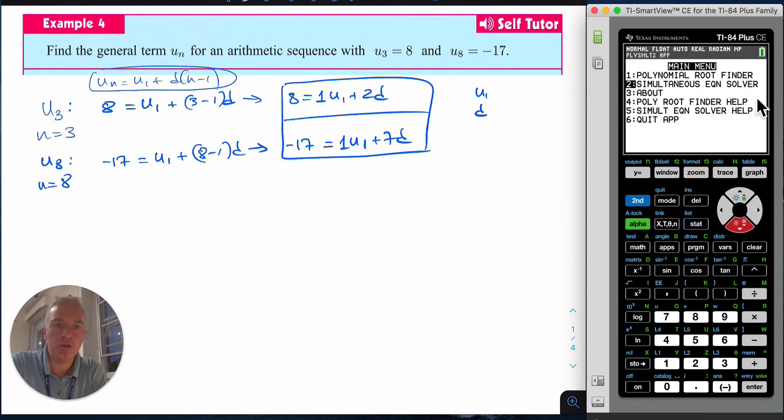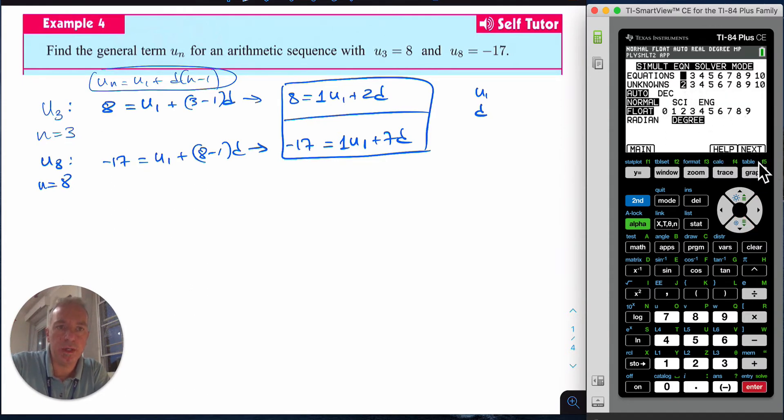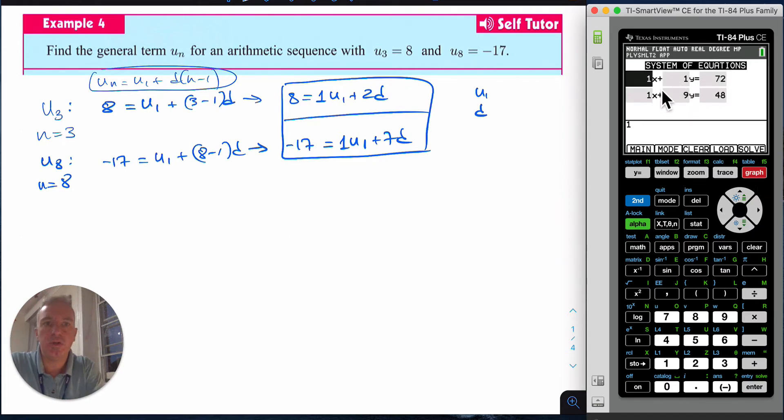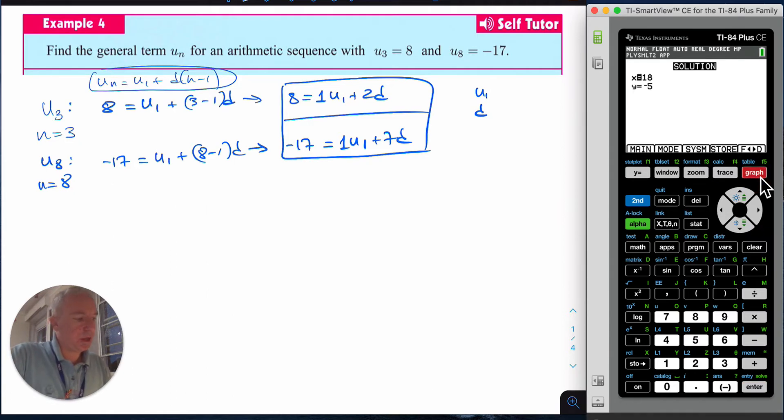I'm going to press the graph button and enter the equations. I don't have d, I have x and y, so 1x + 2y = 8, and the second one is 1x + 7y = -17. Then I press solve and this is my answer: u1 = -18 and d = -5. That's how you solve it.